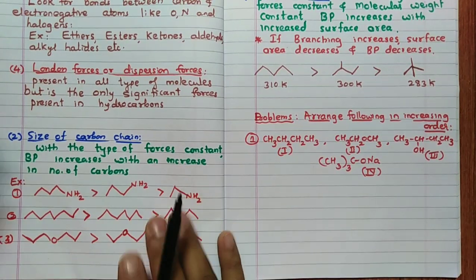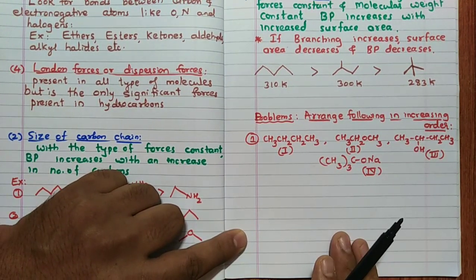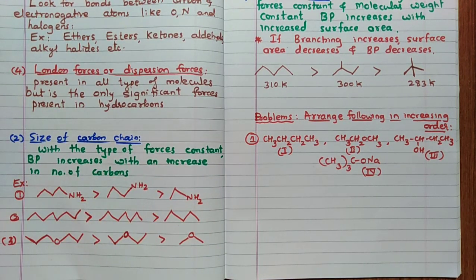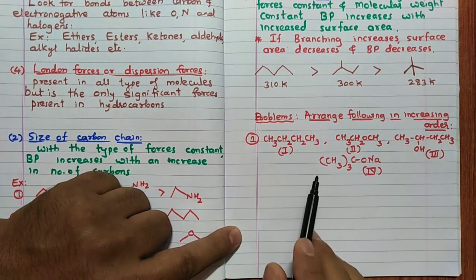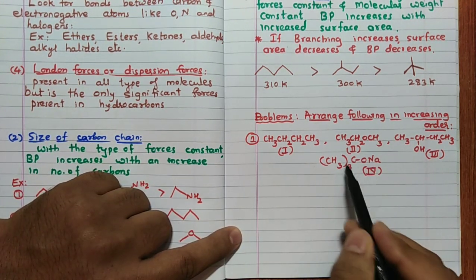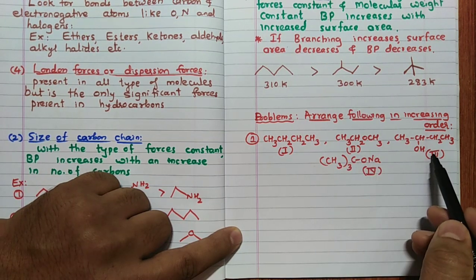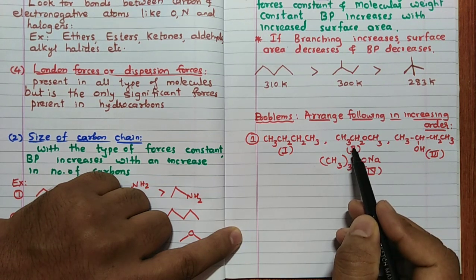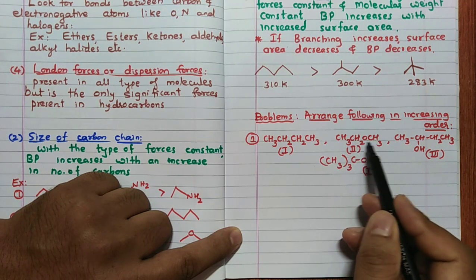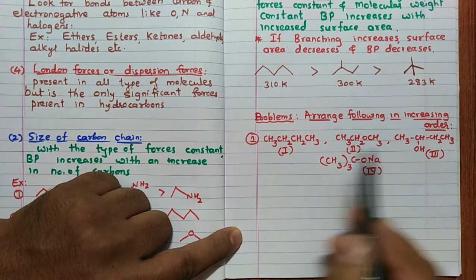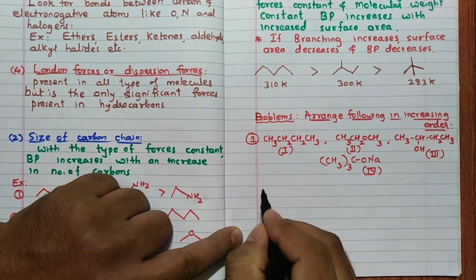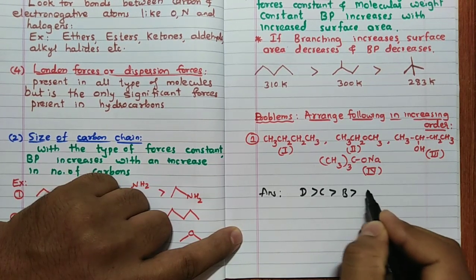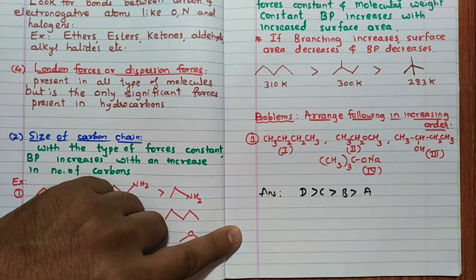Problem 1: Arrange four compounds in increasing order of boiling point. Compound D has ionic forces so it has the highest boiling point. Compound C has hydrogen bonding due to an OH group. Compound B has dipole-dipole forces as it is an ether (CH₃OCH₃). Compound A is a hydrocarbon with only Van der Waals forces. Answer: D > C > B > A.